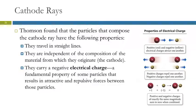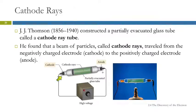Thompson studied this cathode ray, and he found that the particles in the cathode ray have these properties. They travel in straight lines. They are independent of the composition of the material from which they originate. So if we look at this tube again, this cathode is made out of some kind of metal. It doesn't matter what you make it out of. The cathode rays are the same. So that was kind of interesting.